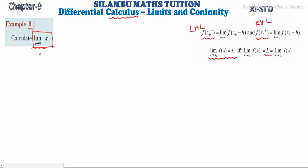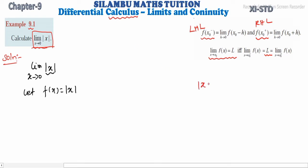Now, given: we will copy the problem. The limit extending to 0 of modulus of x. We will define the naming. Let f(x) = |x|. In the mod function, we redefine it: modulus of x equals minus x, 0, or positive x.